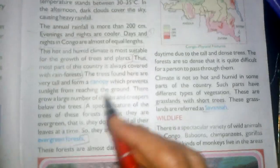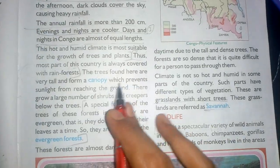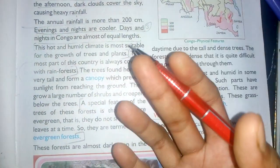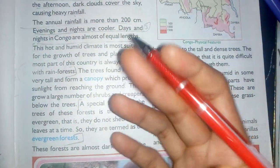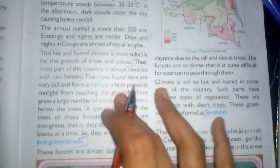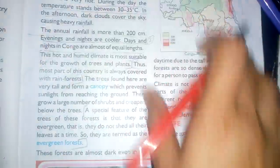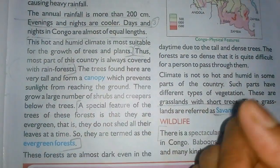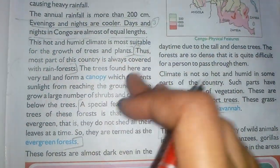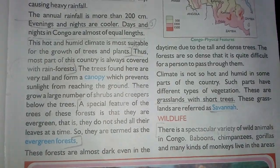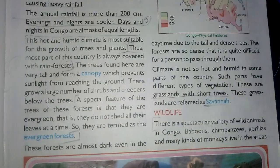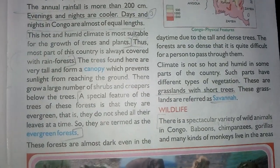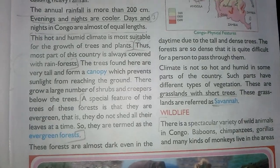We were discussing the canopy — a cover like a roof where the branches and the leaves spread out at the top of a group of trees. The benefit of the canopy is that it prevents sunlight from reaching the ground.